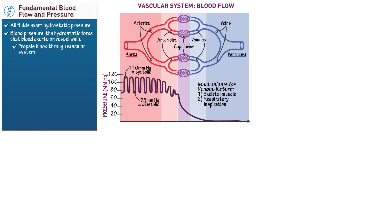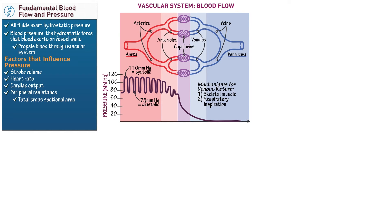Now let's denote the variables that influence blood pressure. Stroke volume is the volume of blood the heart ejects during each contraction. Heart rate is the number of beats per minute. Cardiac output is stroke volume times heart rate. Peripheral resistance is the force produced by blood vessels that opposes blood pressure and impedes flow. Cardiac output, heart rate, and stroke volume are under nervous and hormonal control. For now, let's focus on peripheral resistance, which is influenced by total cross-sectional area and the luminal diameter of the vessels.